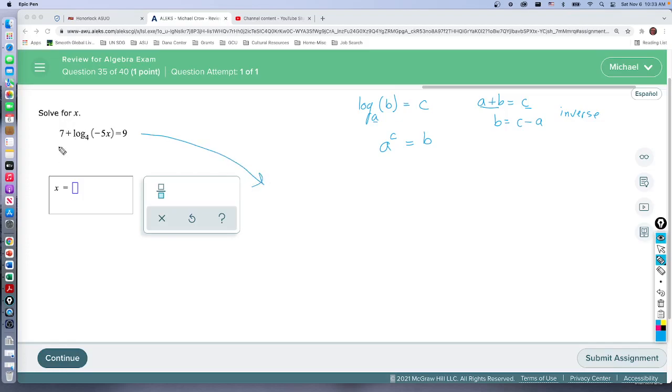First of all, before we do too much, we could subtract 7 from both sides because the 7 is not even involved in the logarithm yet. So we get 0 here, over here we get 9 minus 7 which is 2, and then I'm going to write it down here: we get log base 4 of negative 5x equals 2.